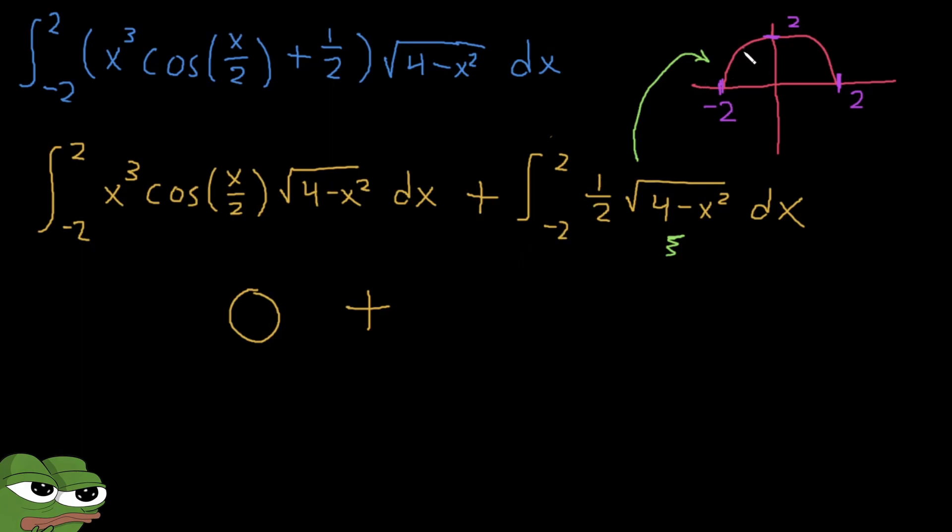And we know the area of circle, that's pi r squared. So this evaluates out to 0 plus pi multiplied by the radius 2 squared, 2 squared over 2.